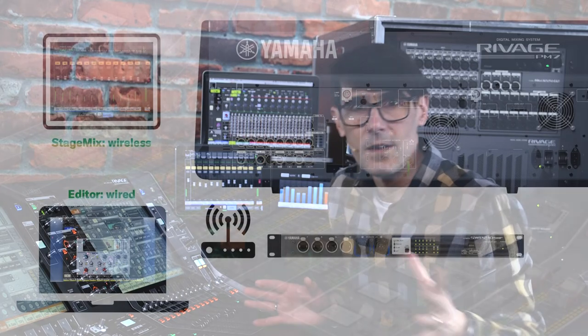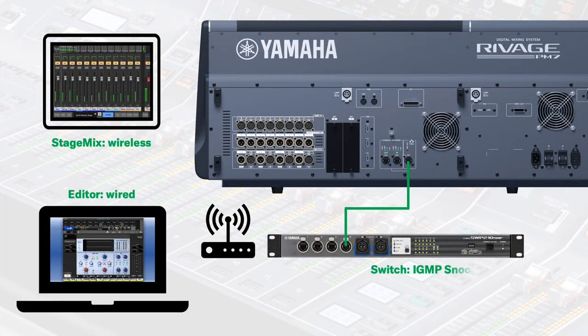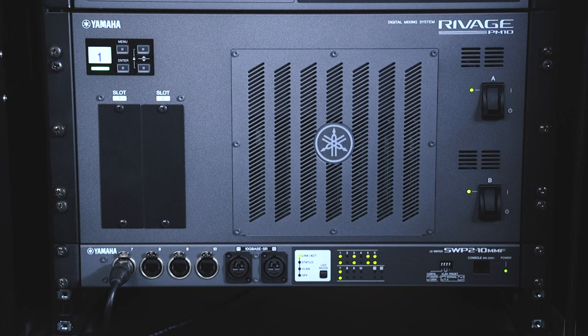On a PM7 system, with the DSP engine inside the control surface, you'll need to use the same network port. And it can be done on other systems, but you'll need either a network switch or a Wi-Fi router that can handle IGMP snooping — a function that filters out multicast data. Without that, your Wi-Fi network will become congested with data meant for the PM Editor software, and the StageMix and MonitorMix apps won't work so well.